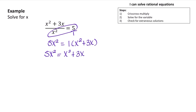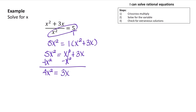Now we're going to move all our terms to one side. We have x squared, so I'm going to subtract x squared from both sides. That x squared is a 1x squared, so 5x squared minus 1x squared is 4x squared. We have 4x squared equals 3x. Now we need to set this equal to 0, because whenever we're working with quadratics, we always set it equal to 0. So I'm going to subtract 3x from both sides, giving me 4x squared minus 3x equals 0.